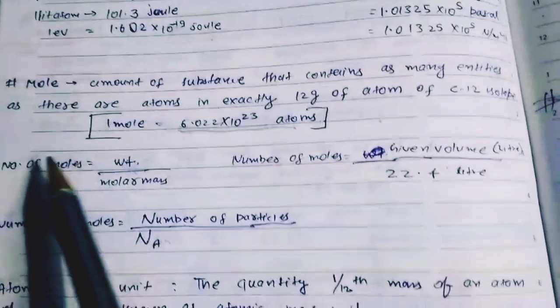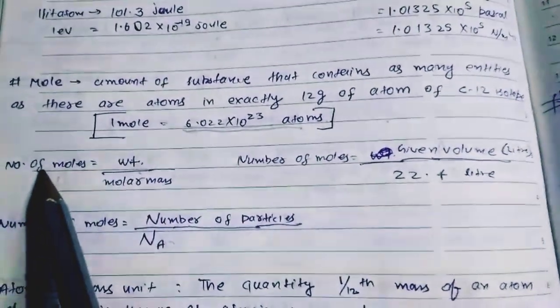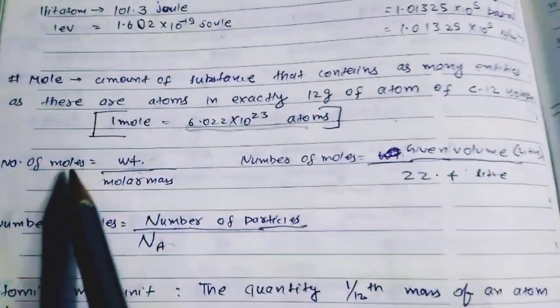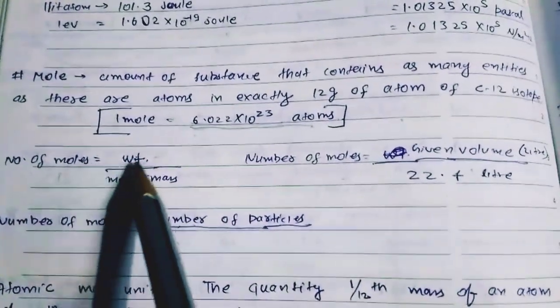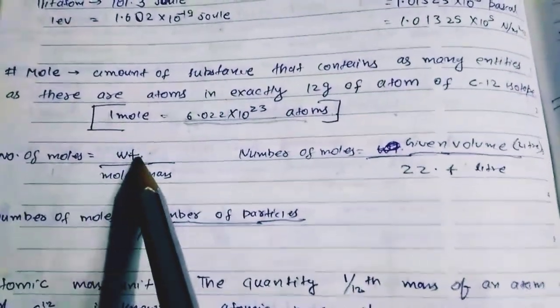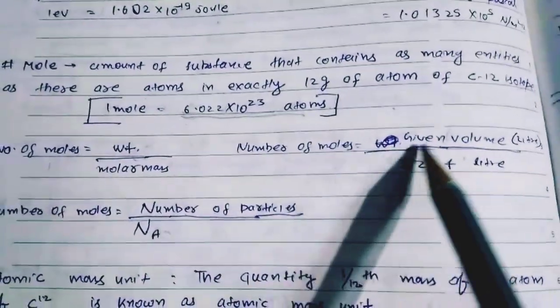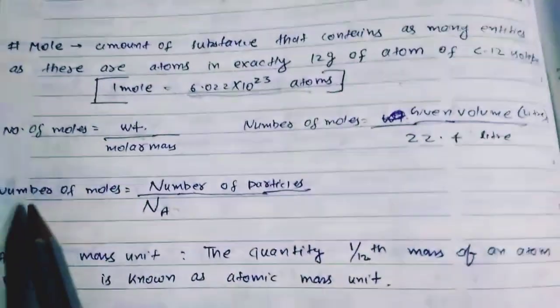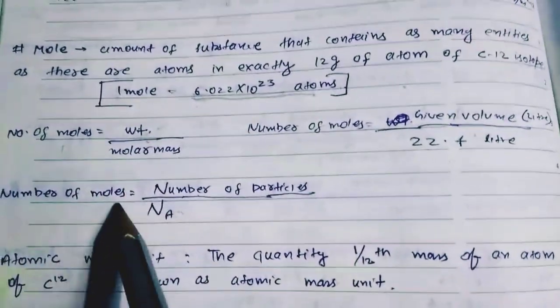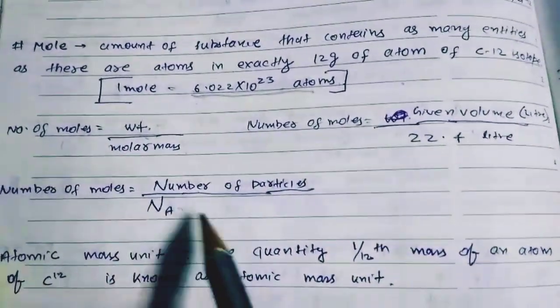Now the formula of moles in different ratios: Number of moles is equal to given weight divided by molecular mass. Number of moles is equal to given volume in liters divided by 22.4 liters. Number of moles is equal to number of particles divided by Avogadro's number, which is 6.022 into 10 to the power 23.